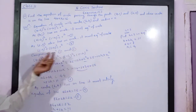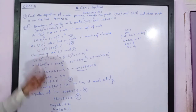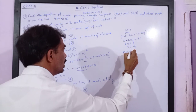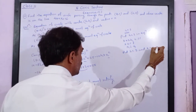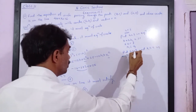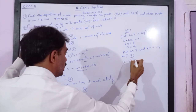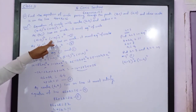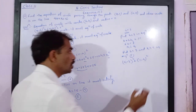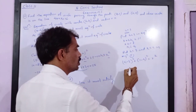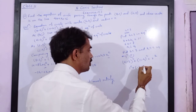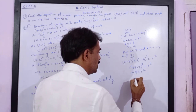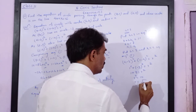Now, having the values of h and k, we substitute them into equation number 1 to find r. Putting h = 3 and k = 4: (4 − 3)² + (1 − 4)² = r², which gives 1² + (−3)² = r², so 1 + 9 = r², meaning r² = 10, and r = √10.